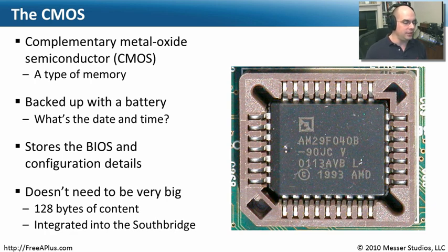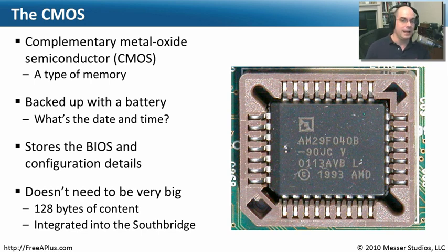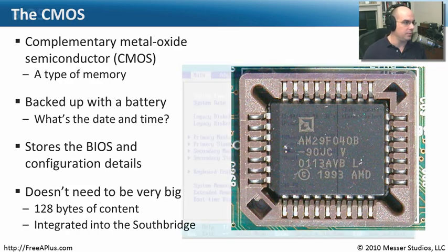This amount of configuration detail — this memory — doesn't have to be very big. We're not storing a lot of information: we're telling our computer there's this kind of hard drive, this much memory, this is the date, this is the time. The BIOS is really there to allow us to configure and store that CMOS configuration. So 128 bytes of content is really all we need, and on many computers it's not even separate memory — the whole process is integrated into the Southbridge chipset. Watch our previous video on chipsets to learn all about the Southbridge.